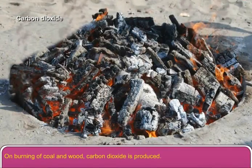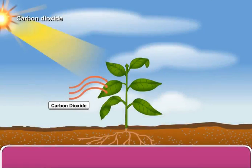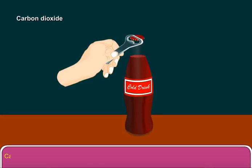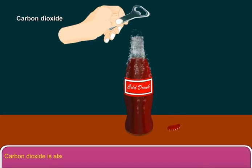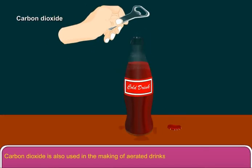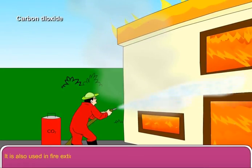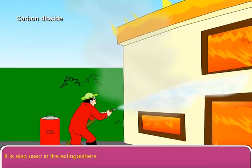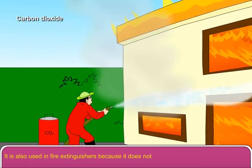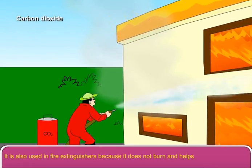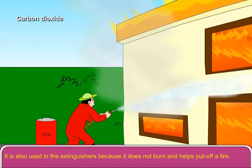On burning of coal and wood, carbon dioxide is produced. Plants use carbon dioxide in the process of photosynthesis. Carbon dioxide is also used in the making of aerated drinks. It is also used in fire extinguishers because it does not burn and helps put off a fire.